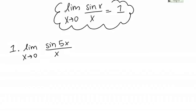Let's start with number 1. I want to know the limit as X goes to 0 of sine of 5X over X. This doesn't quite match the special trig limit that I know. For this formula to work, I need the argument of the sine and the denominator of the fraction to be the same, but here I have 5X on top and just X on the bottom.